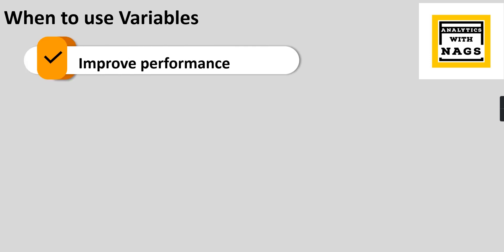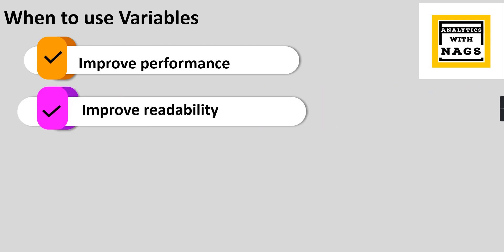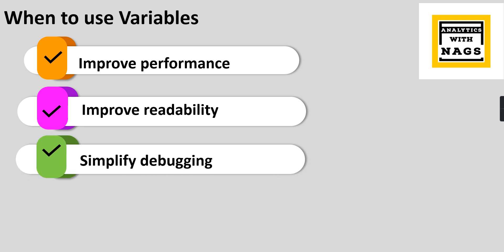Using variables will definitely improve performance, and I'm going to explain how. It also improves readability — this is one of the most important factors. When you have a long DAX code and you come back after some time, it can be very difficult to understand what it's doing. Once you use a variable, it becomes easy to read through and it simplifies your debugging when you're stuck on issues.